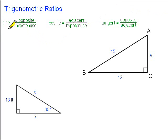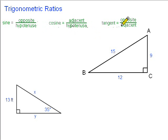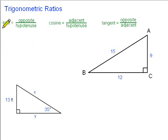The sine is the opposite side over the hypotenuse, and we're talking about the lengths of the sides. The cosine is the adjacent side over the hypotenuse, and the tangent is the opposite side over the adjacent side. A way to remember these things, we can use the word SOHCAHTOA.